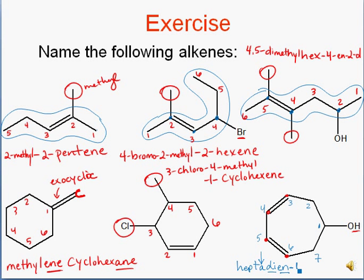We put a 1 in front of the 'ol' to say the alcohol is at carbon 1, and out in front we put 3 and 5 because that's where our double bonds start. I could have also put the 3 and 5 in front of 'diene', but it's a little less awkward to say 3,5-heptadien-1-ol, so that's why I chose to place the numbers there.